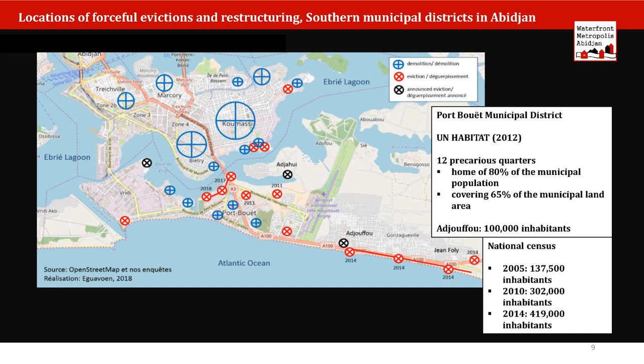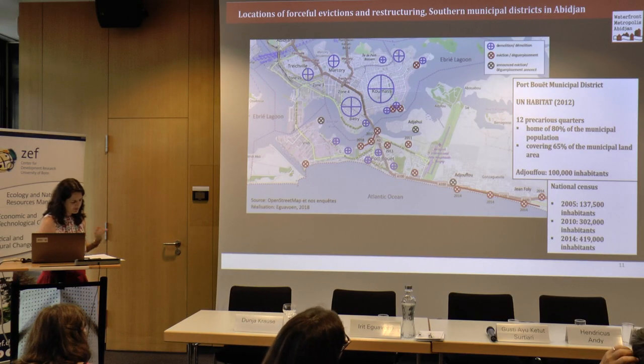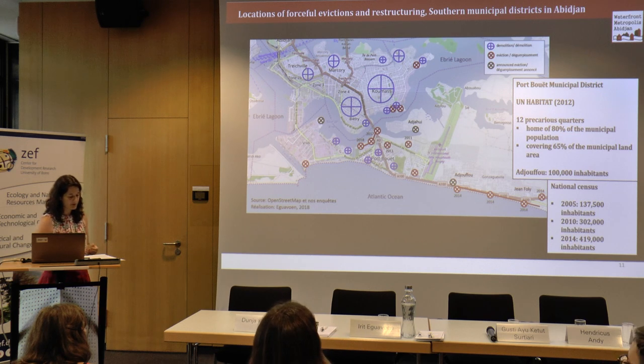Much of the exposed population moved to the waterfronts and beaches of the Port Bouët municipal district. During the conflict years, war refugees also moved into these areas. Typical densities today are about 26,800 people per square kilometer — and we're not talking about elevated housing, just single-story buildings. Waterfronts have become problem spaces because they are intensively used, densely populated, and under-provisioned, and located on vulnerable land.